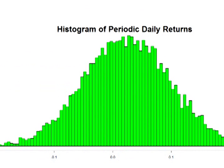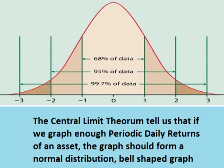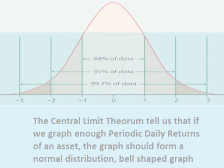The two main ways of doing this is to simply use the historic periodic daily returns to create a histogram, or to use the periodic daily returns along with some other tools and assumptions to create a continuous distribution such as a normal distribution bell graph.